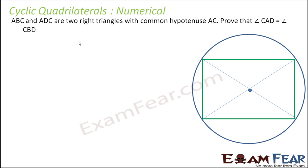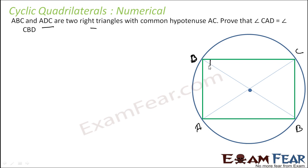ABC and ADC are two right triangles with the common hypotenuse AC. Since they are right triangles, AC has to be the diameter of the circle passing through both. We have to prove that angle CAD is equal to angle CBD.